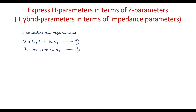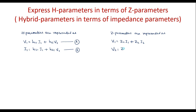Similarly, I will write the equations of Z parameters. Z parameters are represented as: V1 = z11·I1 + z12·I2, and V2 = z21·I1 + z22·I2. I will call these equation C and equation D.